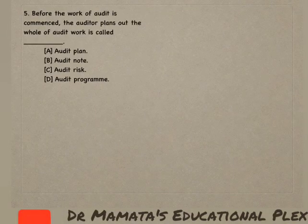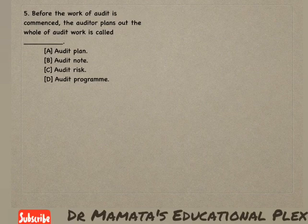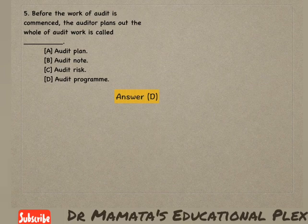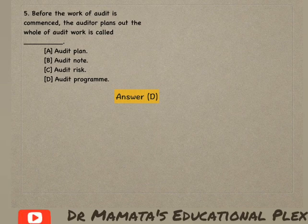Next question: Before the work of audit is commenced, the auditor plans out the whole of audit work — this is called audit plan, audit note, audit risk, or audit program? Auditor ko jo kaam karna hota hai aur kaam karne se pehle woh jo plan draft karta hai use kya kaha jaata hai? Woh hota hai audit program. So option D is the correct answer.